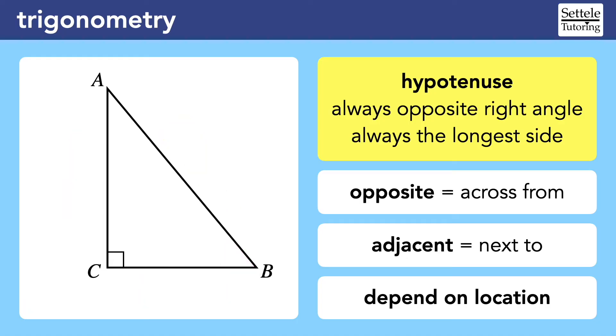If we switch our focus to angle A, the sides change. Again, the hypotenuse is still the hypotenuse because it's still across from the right angle, but now the opposite side is BC because it's across from angle A. The adjacent side is now AC because it's next to angle A.